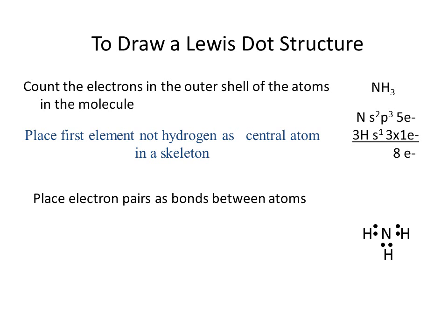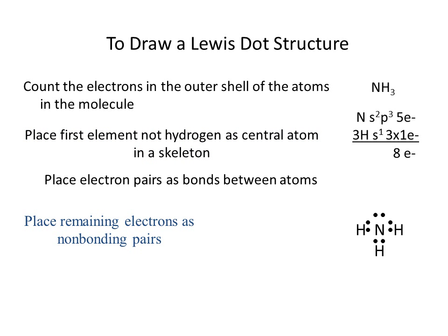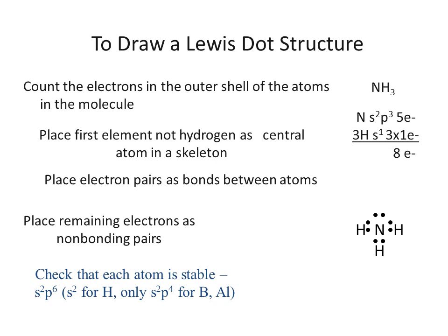After we've formed all our bonds, then we place our non-bonding pairs. The non-bonding pairs now make nitrogen have an octet and we can see that each hydrogen has two electrons. This is the last step that you need to do, which is to check that each atom is stable. Each atom other than hydrogen needs to have an octet and every hydrogen should have only one pair of electrons. Never have more than two electrons on a hydrogen.